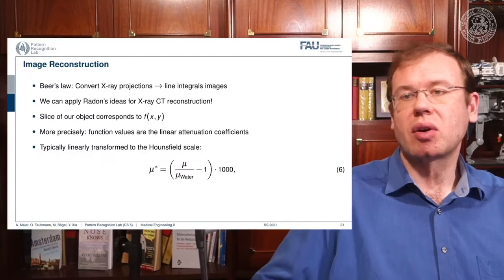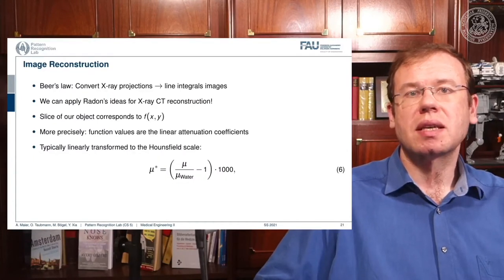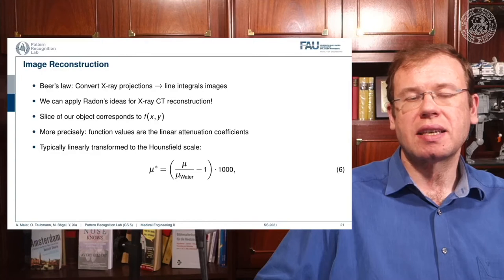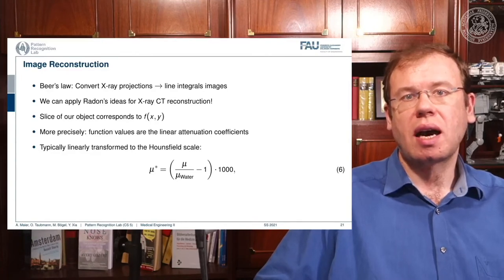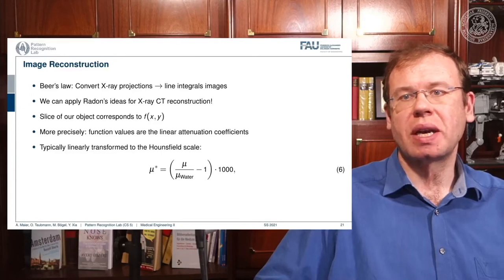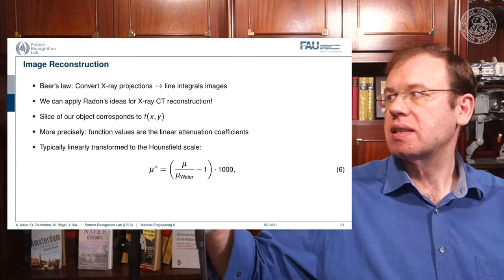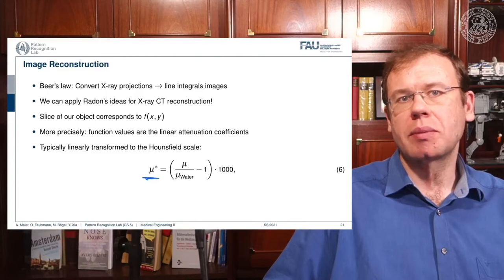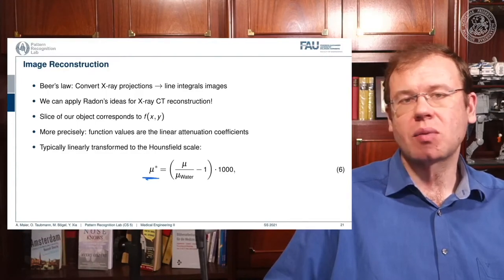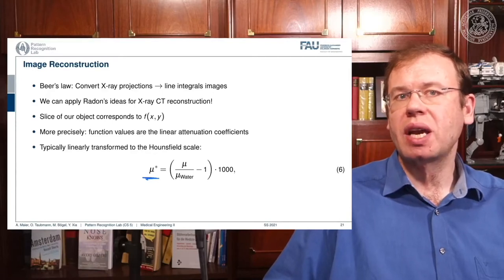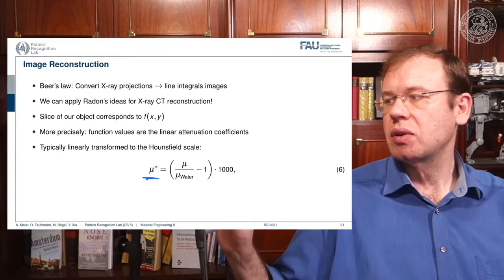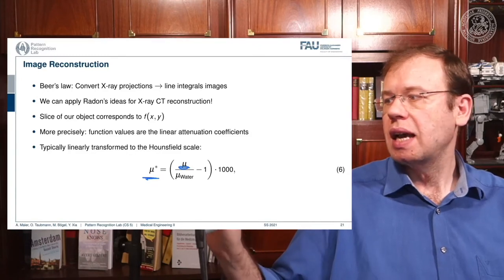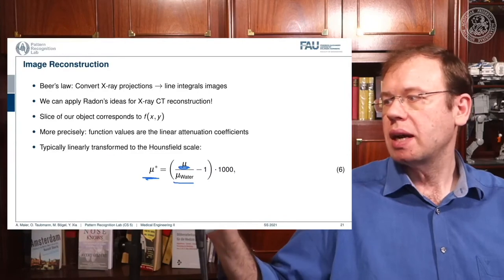Let's have a look at the reconstruction problem. One key problem is that the X-ray projections essentially form line integrals. We understood how we can get the original information, but what we still haven't discussed is that the attenuation coefficient mu is actually dependent on the X-ray energy. So we somehow want to be able to create standardized values, which is why in reconstruction theory we have introduced so-called Hounsfield values.